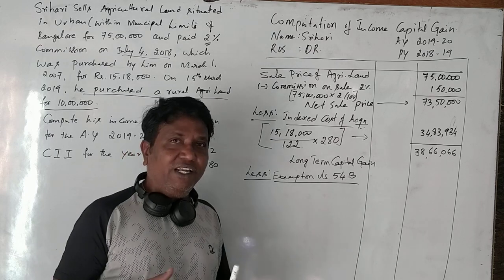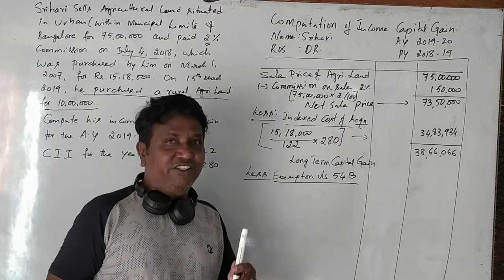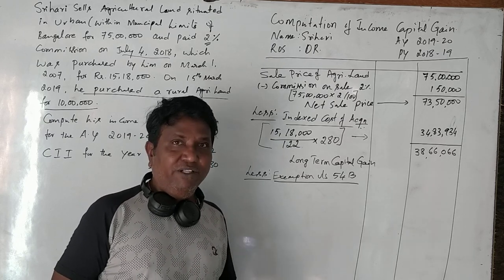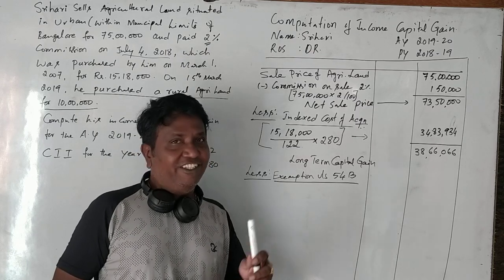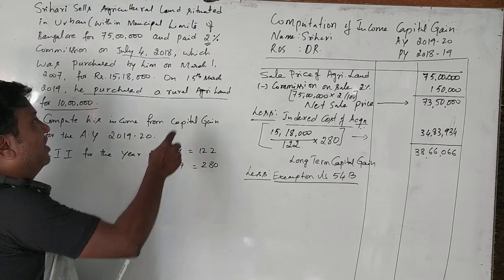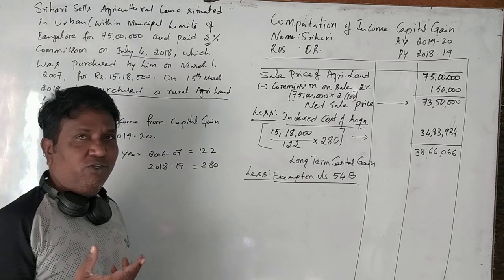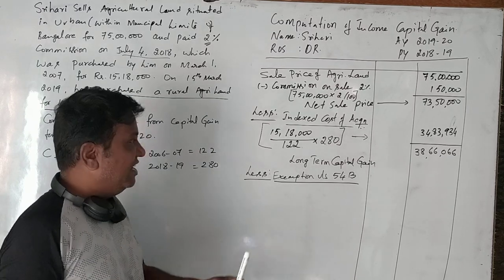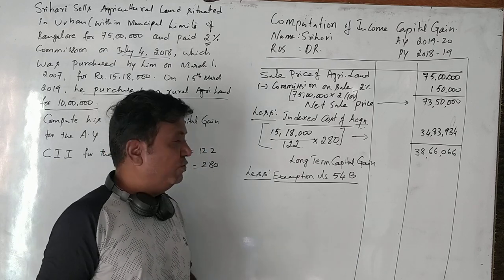Regarding the time limit: after selling the old agricultural land, you must purchase a new agricultural land within one year. Here, Shri Hari purchased the new agricultural land on 15th March 2019, which is within one year of the sale in July 2018. Therefore, he is eligible for exemption under Section 54B.